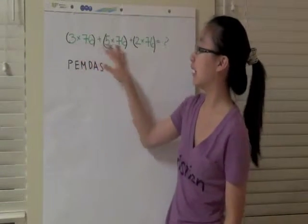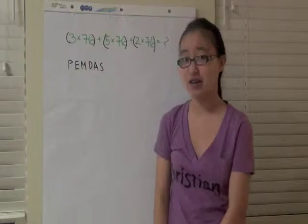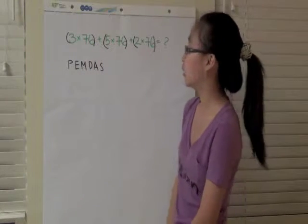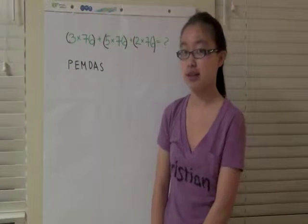But instead of multiplying all of these out, because it's a lot of work, 76 times 3, I don't know how to do that in my head. So there's some tricks that we can use to try to make computation a little bit easier.